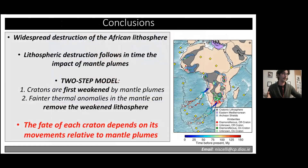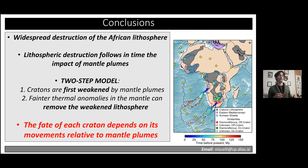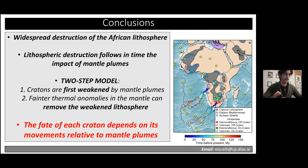In summary, we have observed widespread destruction of the African lithosphere principally over the past 200 million years, and this lithospheric destruction follows in time the impact of mantle plumes. For Angola and Kapval, this can be described with a two-step model: cratons are first weakened by mantle plume onset, and then fainter thermal anomalies can remove the weakened lithosphere remaining after plume impingement. The bottom line is that the fate of each craton appears to depend on its movement relative to mantle plumes.